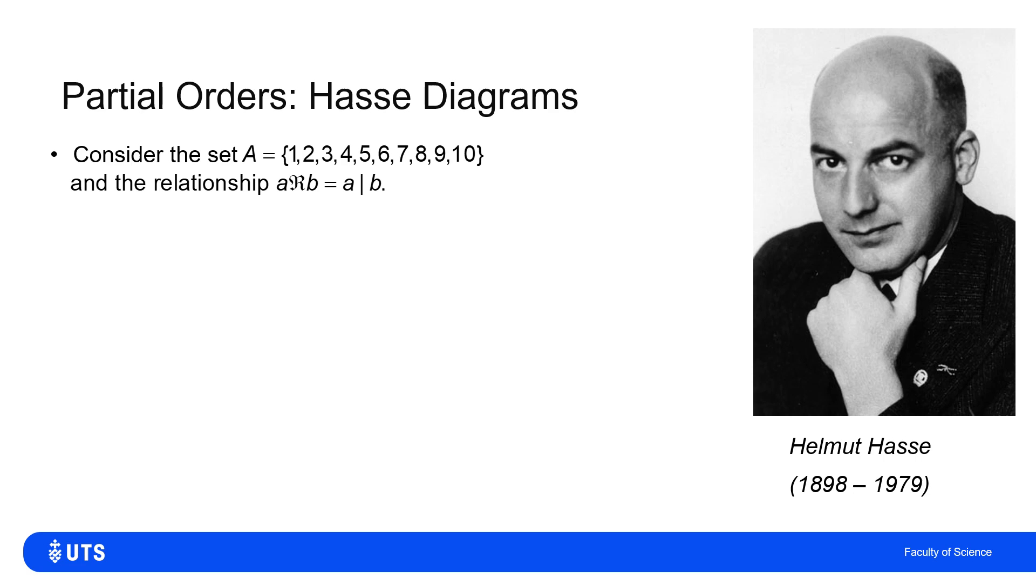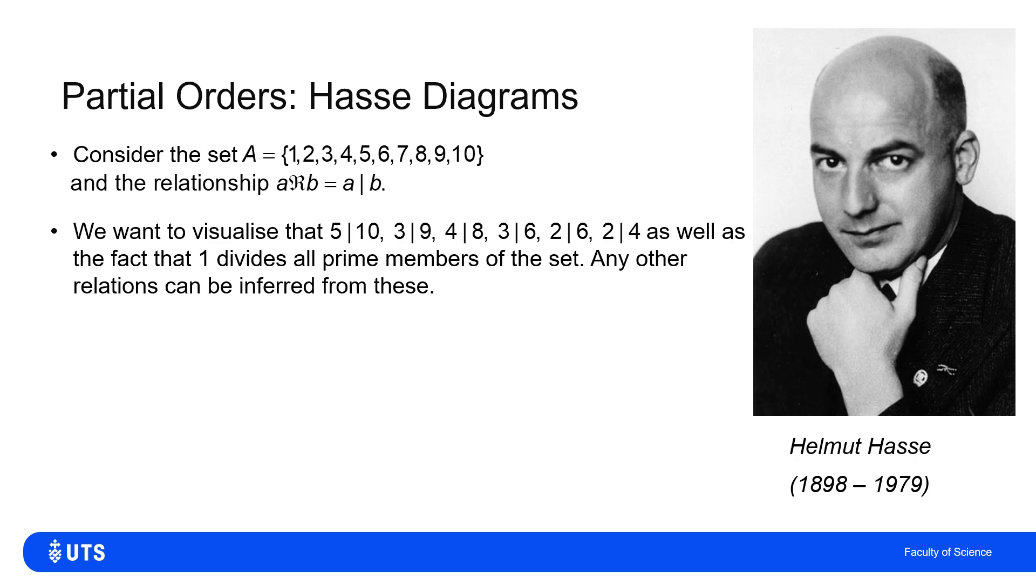I'll leave the hypnotically handsome face of Helmut Hasse on your screen. And we'll introduce the set A, which is the first 10 positive integers. And I'll define the relationship R to be A is related to B when A divides B. So I want to visualize that 2 divides 10, 3 divides 9, 4 divides 8, 3 divides 6, 2 divides 6, 2 divides 4. And that all of the prime numbers are divisible by 1. That's all I need to visualize because everything else can be inferred through transitivity.